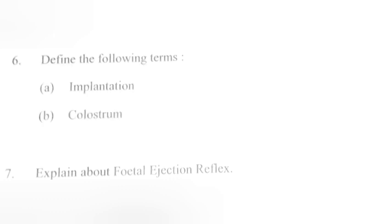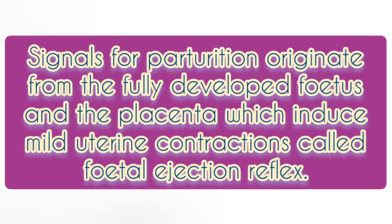Question 7. Explain about foetal ejection reflex. Answer: Signals for parturition originate from the fully developed foetus and the placenta, which induce mild uterine contractions called foetal ejection reflex.